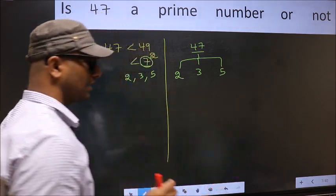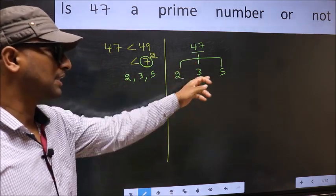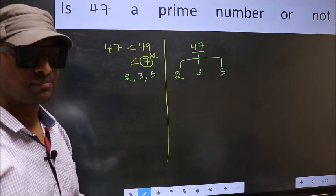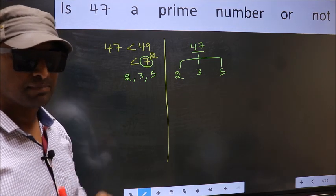Now, if 47 is divisible by any one of these numbers, we say it is not a prime. Otherwise, we say it is a prime number. Clear with the method?